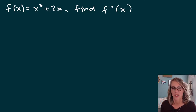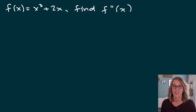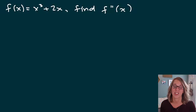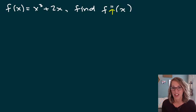Let's take a look at some higher order derivatives. What we're really doing is just taking a derivative once and then another time. For this first example, I've got a function x cubed plus 2x and I want to find the second derivative. That's what this double prime means. I need to start by finding the first derivative.